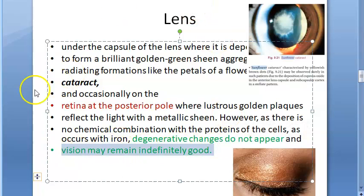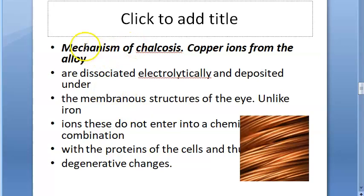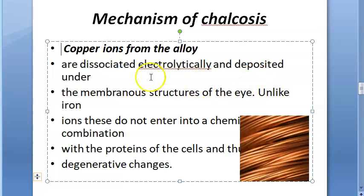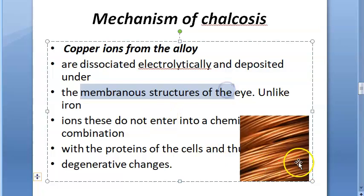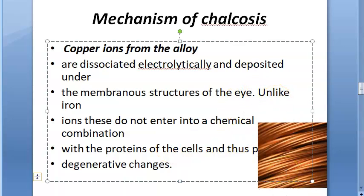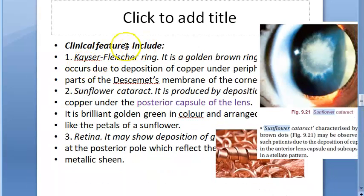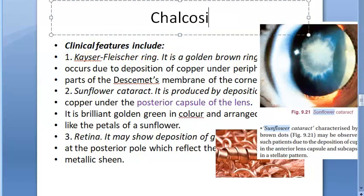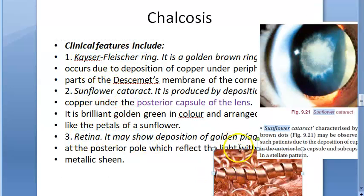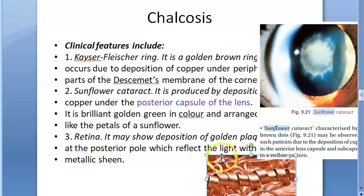Vision remains good. The mechanism of chalcosis: copper ions from the alloy dissociate and deposit under the membrane structures of the eye. Unlike pure copper, they don't enter into any chemical combination with proteins and don't produce degenerative change. The three clinical features of chalcosis are: Kaiser-Fleischer ring, sunflower cataract, and golden metallic sheen plaques at the retinal posterior pole.